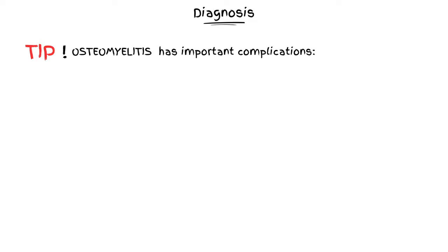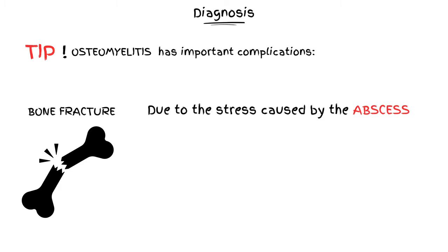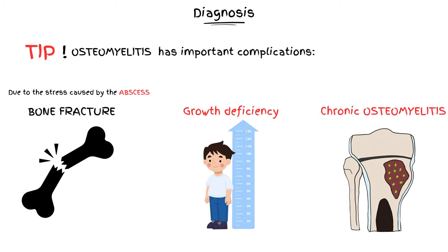Osteomyelitis can cause some important complications, such as pathological fractures — due to the stress upon the bone tissue and the erosion determined by the abscess — growth deficiency, where the growth plate will close earlier than expected, and chronic osteomyelitis, which happens because the acute infection does not completely respond to therapy.